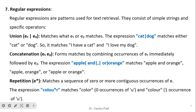Repetition uses the star operator to match zero or more occurrences. For example, the expression 'colou*r' means the star represents zero or more appearances of 'u.' For zero appearances it matches 'color,' and for one appearance it matches 'colour.' This demonstrates how regular expressions can be written using a variety of operators.